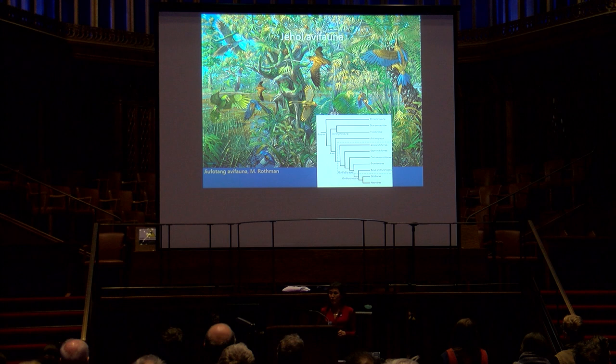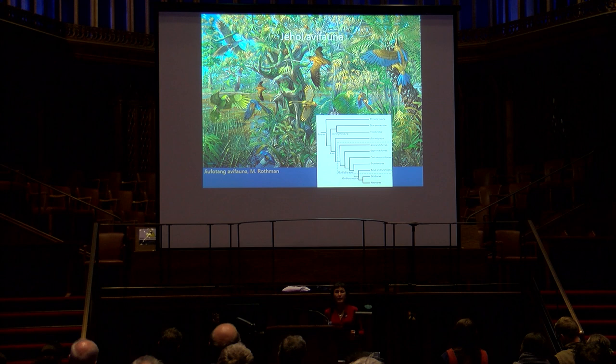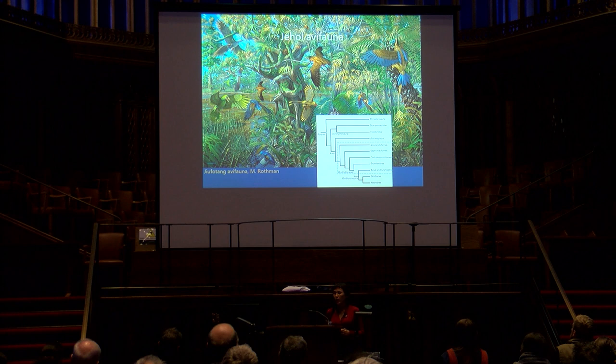The Jehol avian fauna includes taxa like Jeholornis, which has a long bony tail and is only more derived than Archaeopteryx, as well as the most primitive known basal pygostylians — Confuciusornis and Sapeornis — and the earliest known ornithothoracines, which include the enantiornithines, the dominant clade of Cretaceous land birds, as well as the ornithuromorphs, the clade that includes Neornithes with modern birds nested within.